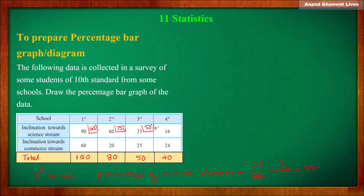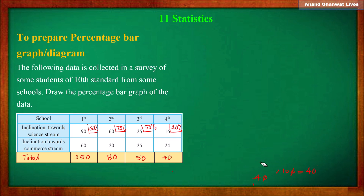In the fourth school: total number of students are 40 in 10th standard, and 16 are turned towards science stream. So 16/40 × 100: 4 × 1 = 4, 4 × 4 = 16, 4 × 10 = 40. So 40% of students are turned towards science faculty in the fourth school. We have now calculated the science faculty percentage for all schools.